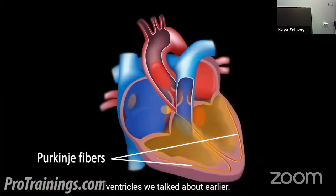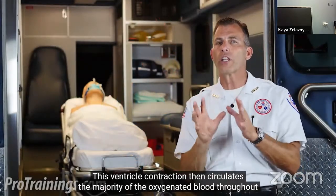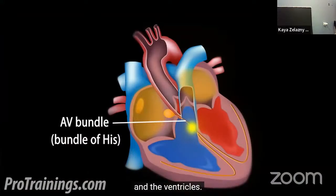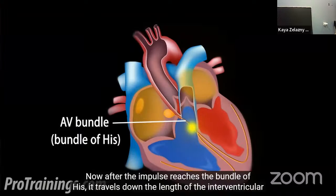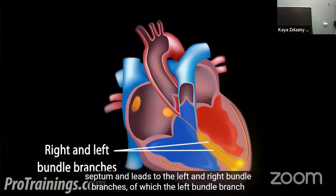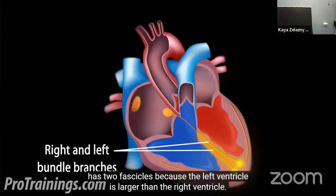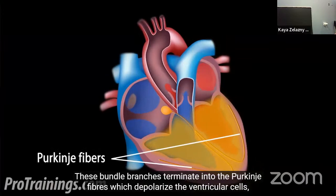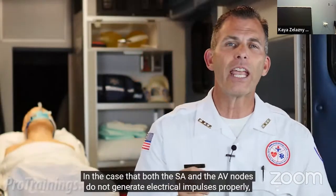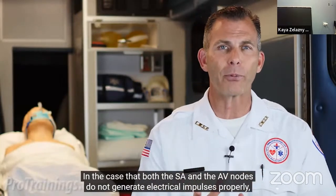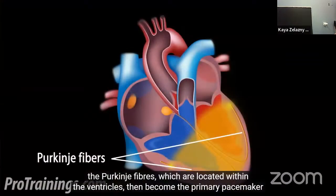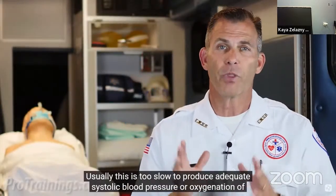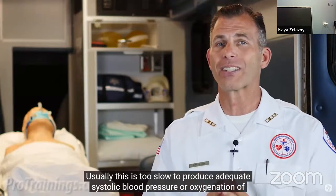The Purkinje fibers wrap around the ventricles. Ventricular contraction then circulates oxygenated blood throughout the body. The bundle of His is the route of electrical transmission between the atrium and the ventricle. The impulse travels down the interventricular septum into the left and right bundle branches — the left branch has two fascicles because the left ventricle is larger. These bundle branches terminate into the Purkinje fibers, which depolarize the ventricular cells and cause ventricular muscles to contract. If both the SA and AV nodes fail, the Purkinje fibers become the primary pacemaker source, generating impulses at only around 15 to 40 beats per minute — usually too slow to maintain adequate blood pressure.